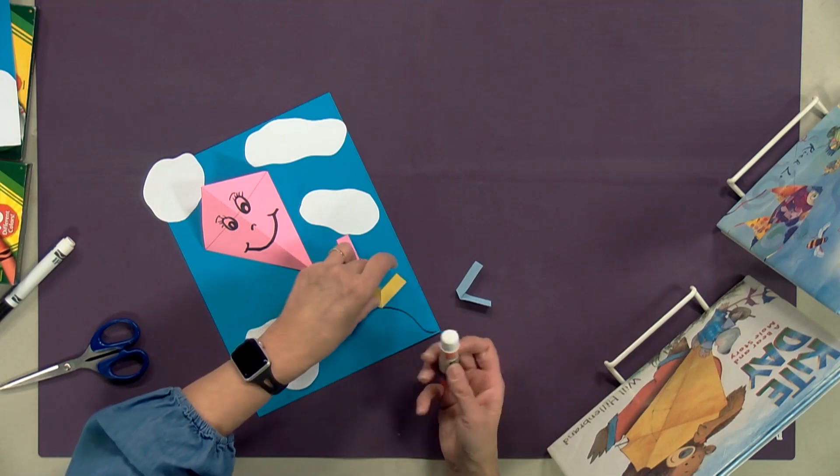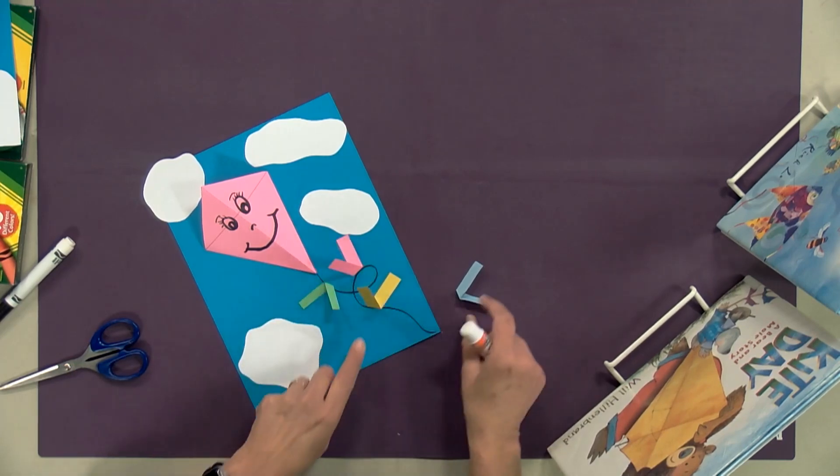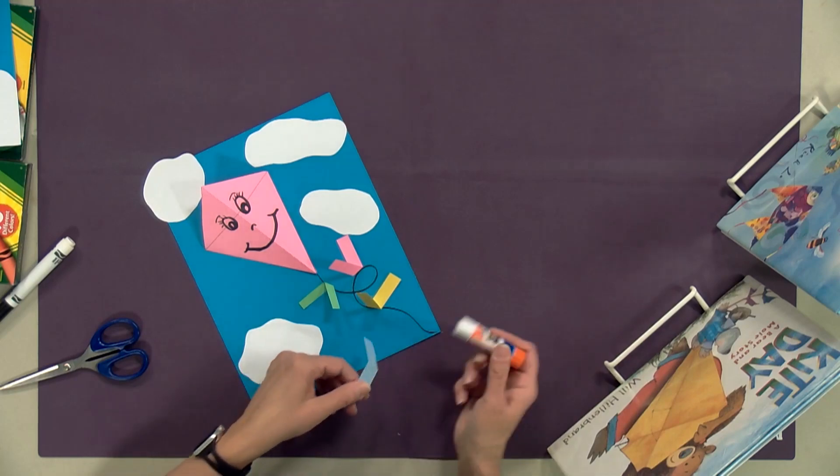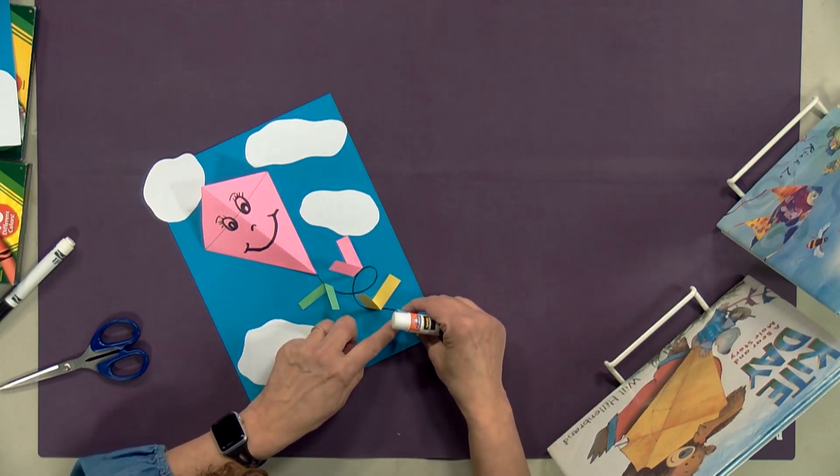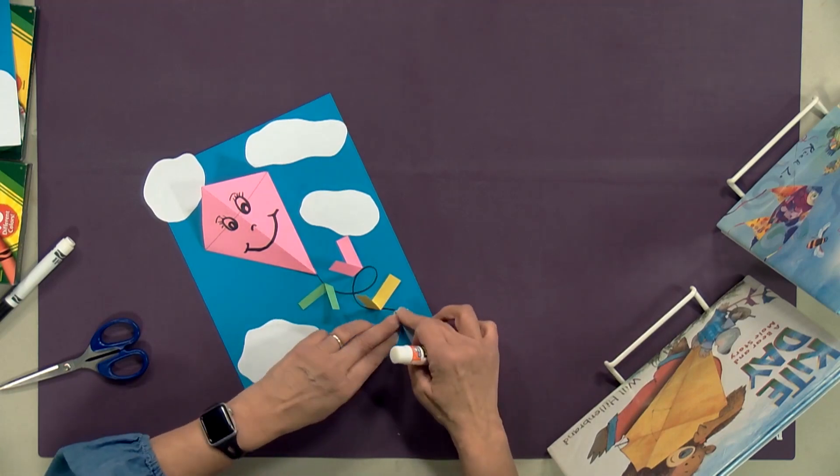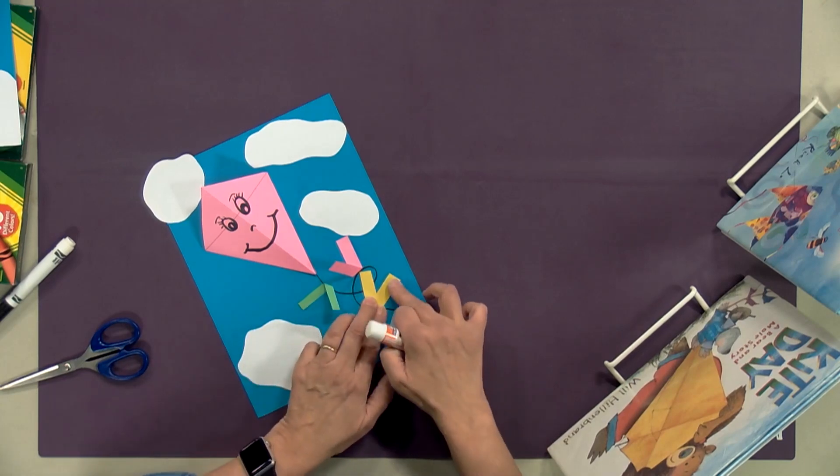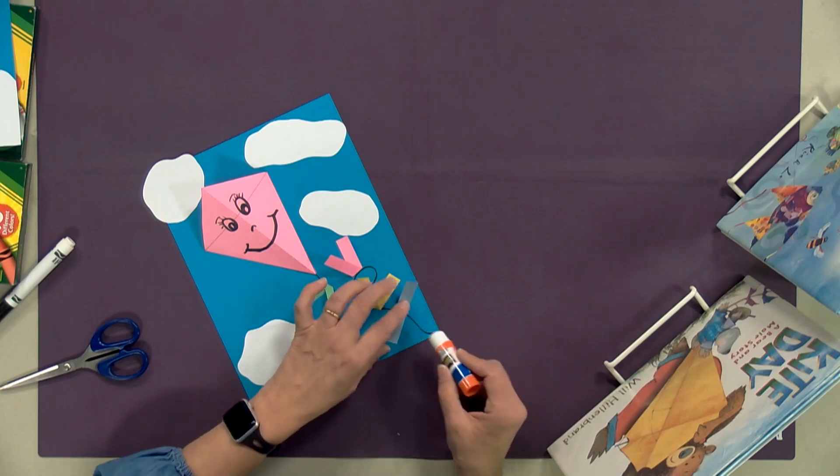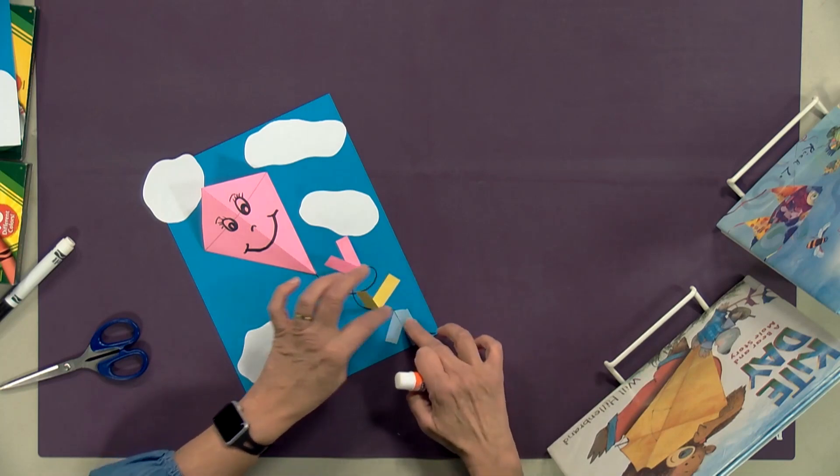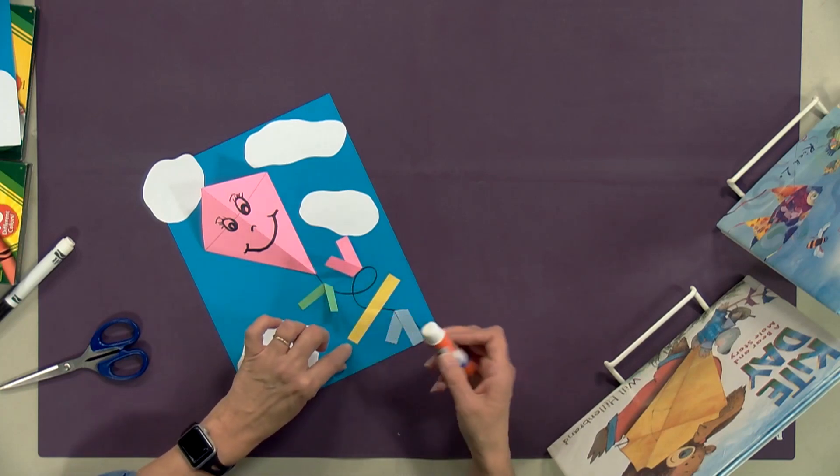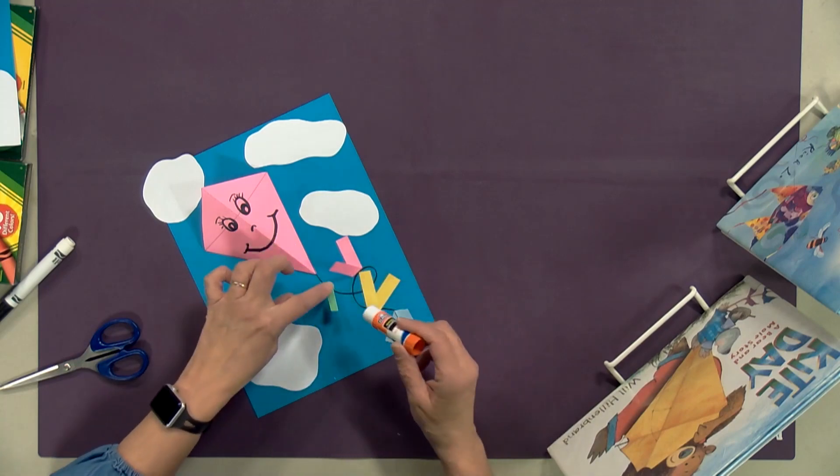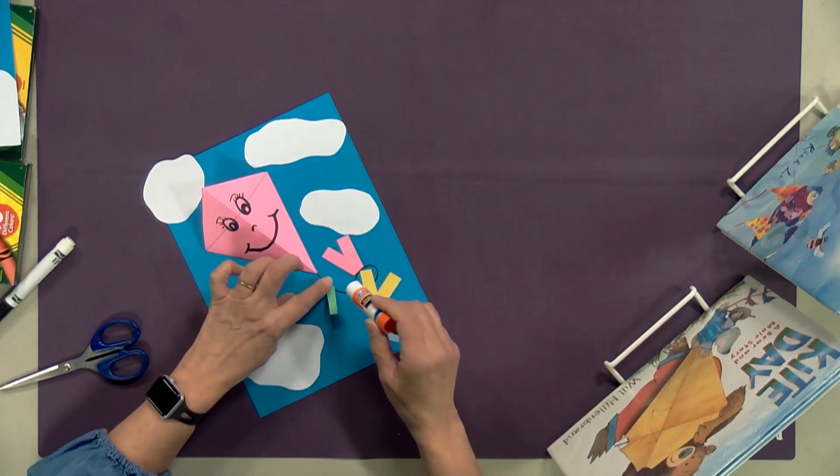There we have that one and one more over here. Just try to glue that so it's like it's hanging on to that string of your kite. If you don't want it sticking up like that, you can go ahead and give it a little glue and stick it down, but either way works. I'll just go ahead and stick them down and just let the kite be the one that's popping up off the page.